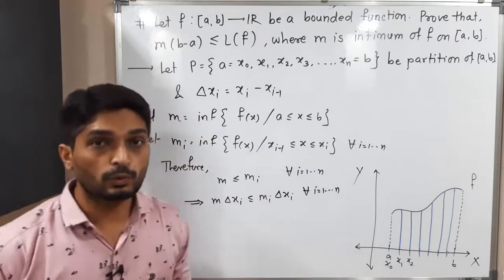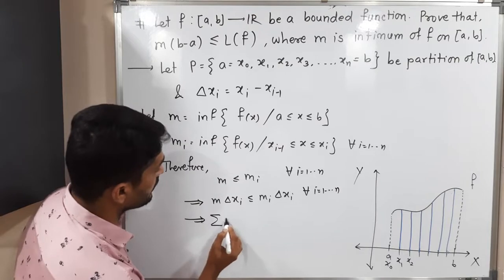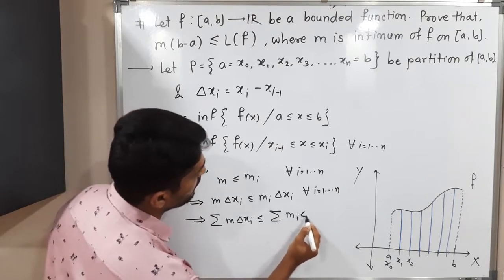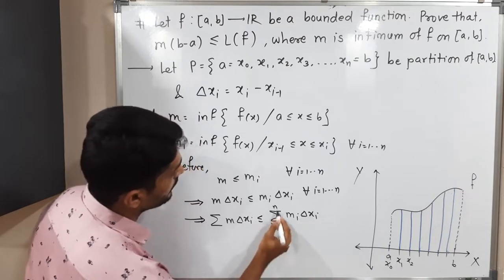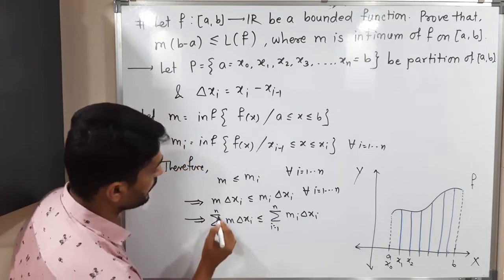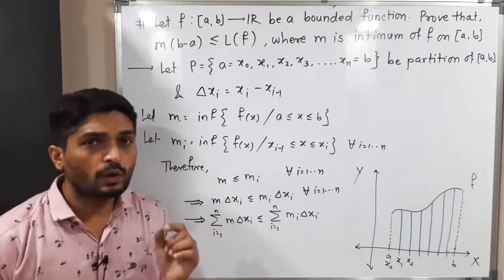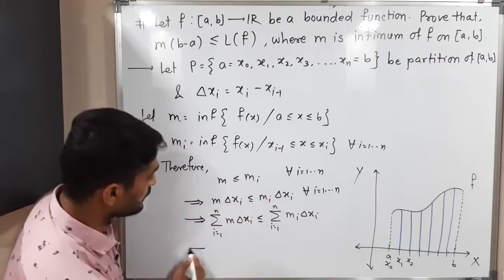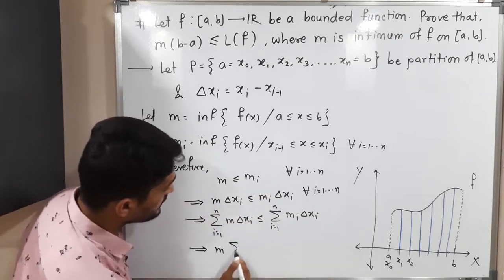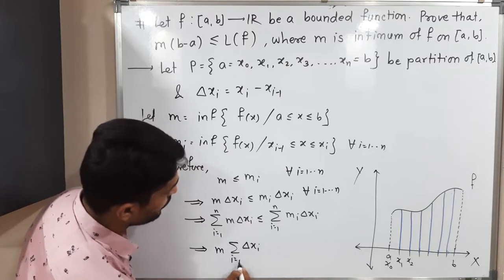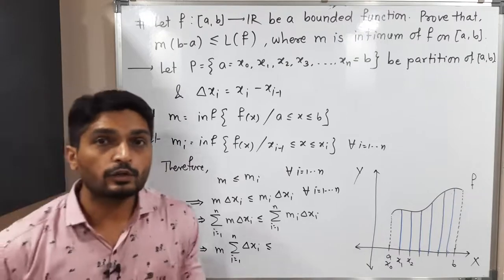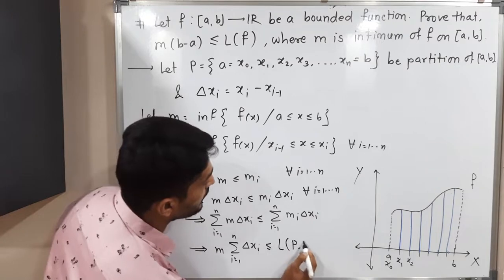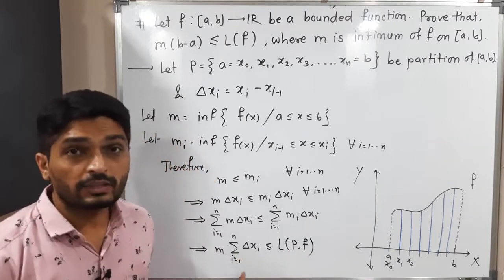Taking the summation of both sides from i = 1 to n, we get: summation of m·Δxᵢ ≤ summation of mᵢ·Δxᵢ. On the left side, m is independent of the summation index, so we factor it out: m · Σ(Δxᵢ) ≤ L(P, f), since the right-hand side is nothing but the lower sum L(P, f).